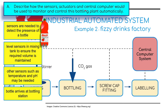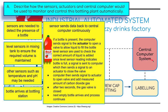Describe how sensors, actuators, and the central computer would be used to monitor and control this plant. Sensors are needed to detect the presence of a bottle — if there's no bottle there, the liquid will be all over the floor. Level sensors in mixing tanks ensure the required volume is maintained. Other sensors might be needed, such as temperature and pH, to monitor what's going into the bottles. Sensors send data back to the central computer continuously. If a bottle is present, the computer sends signals to the actuator to open a valve to allow the liquid to fill the bottle.